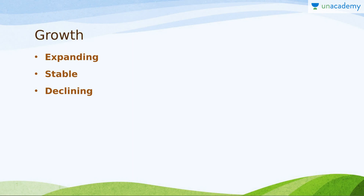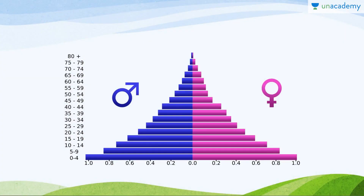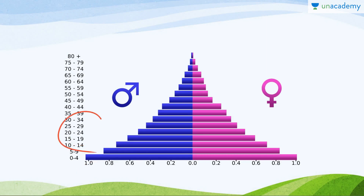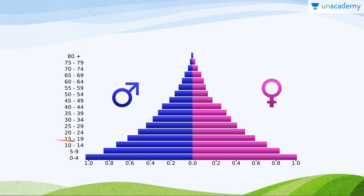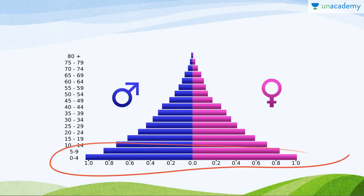Population growth is of three different types: expanding population, stable population, and declining population — showing how changes in population are occurring. On the diagram, the age axis goes from 0–4, 5–9, 10–14 as the pre-reproductive age, then from 15 to around 40 is the reproductive age group — biologically from 15, though legally from 20.